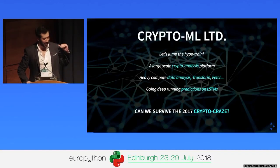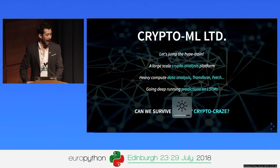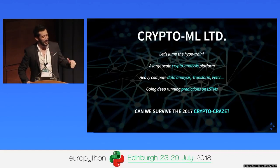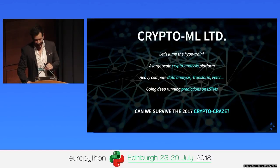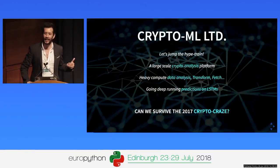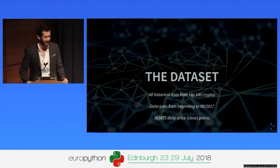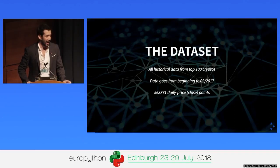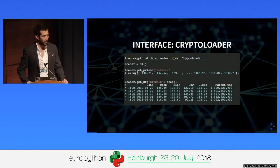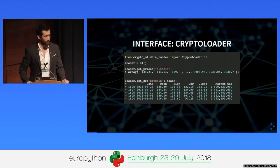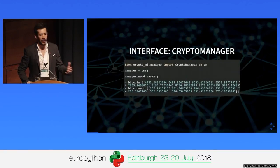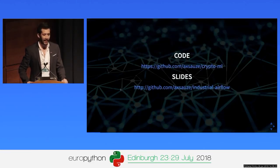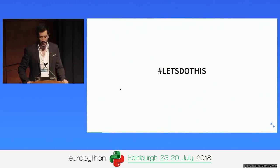We're going to jump on the hype train and build a large-scale crypto analysis platform. We're going to do heavy compute, data analysis, transform, fetch, and run predictions on LSTMs — because why not? We're putting ourselves back in end of 2017, asking: can we survive the crypto craze? The dataset is all historical data from top 100 cryptos, going back to September 2017, over 500,000 prices. There's an interface that loads all cryptocurrencies in a Pandas DataFrame, and another that triggers distributed predictions. The code and slides can be found in my GitHub.